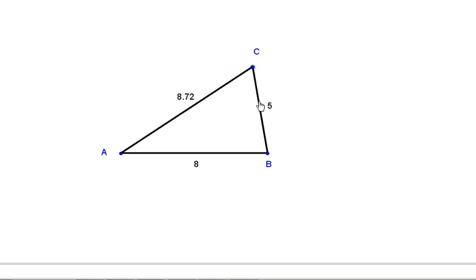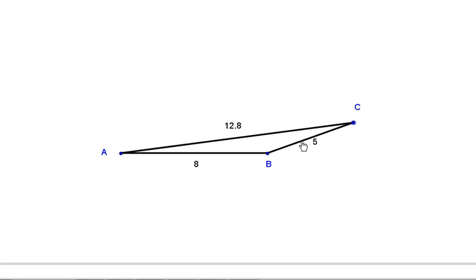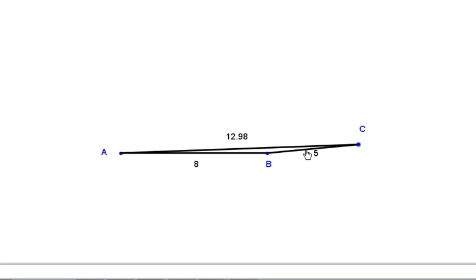Similarly, if we were to swing C out and to make AC as large as possible, we see that AC can't be greater than 13. Again, we would have the same problem. If AC is greater than 13, then we wouldn't be able to connect our other two sides at point B.